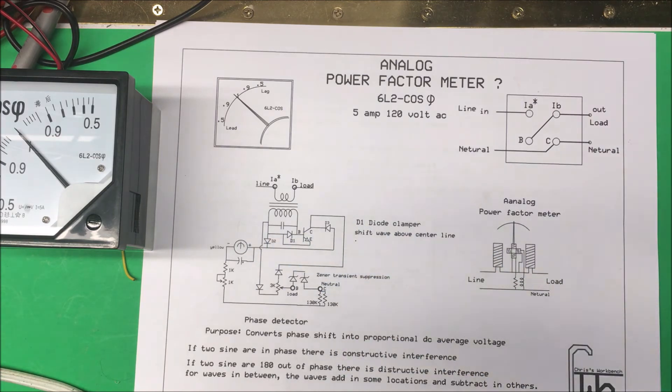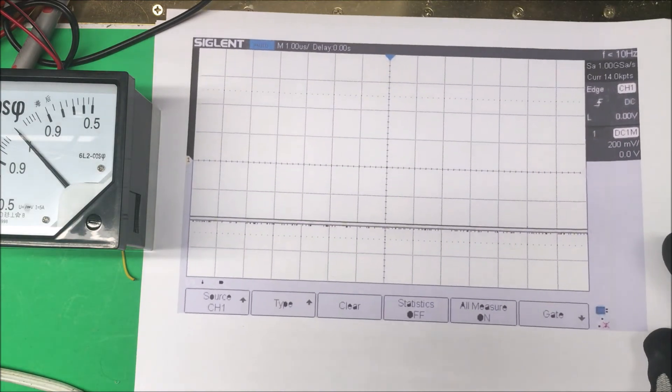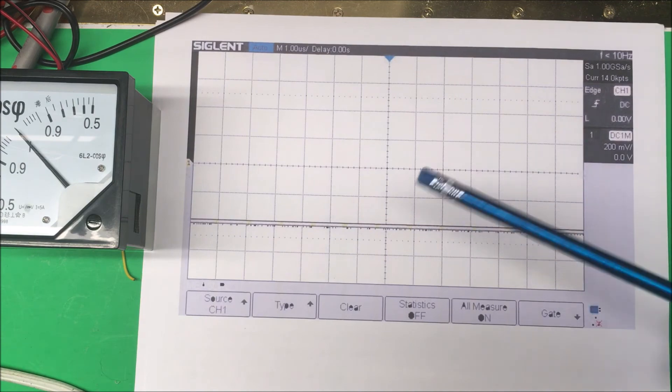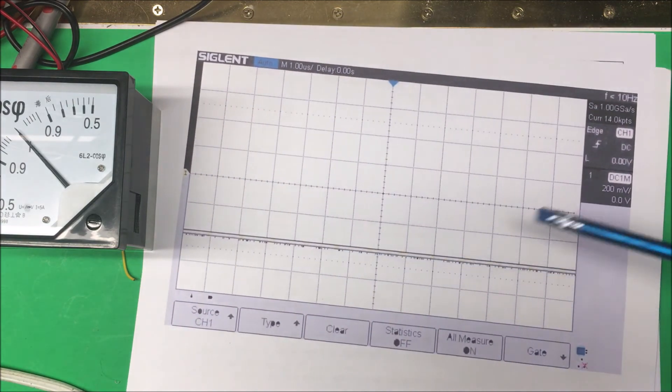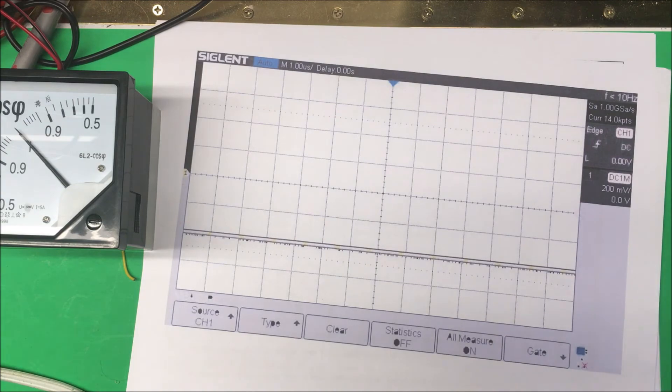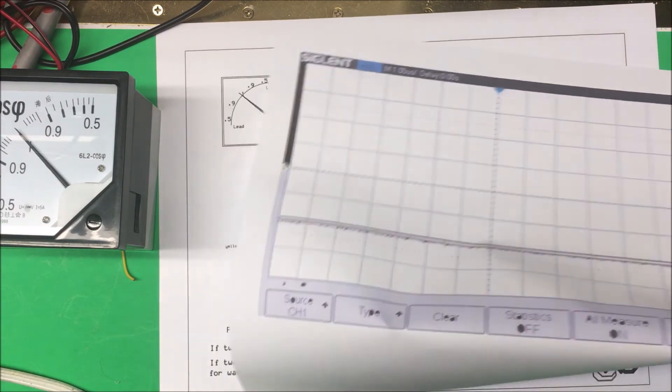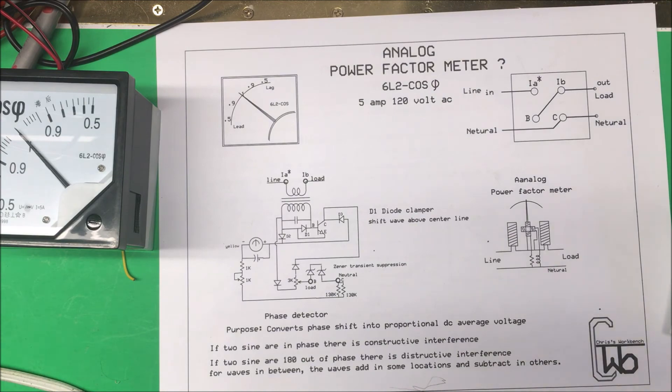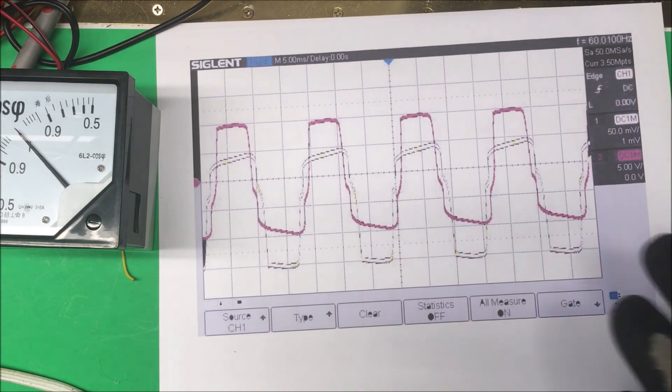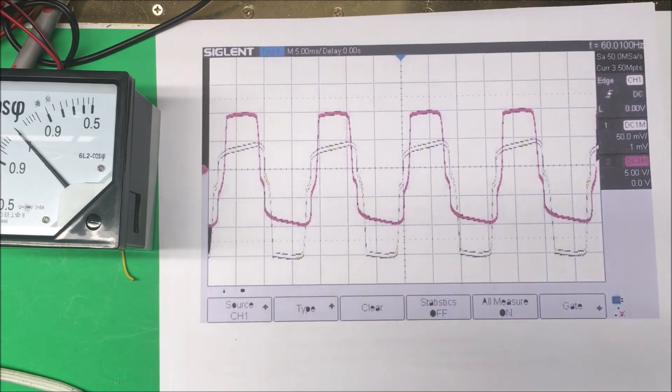I put it on the scope. This is the DC output, it was negative here but it puts out a nice DC voltage. I've got a 47 microfarad capacitor on the output.